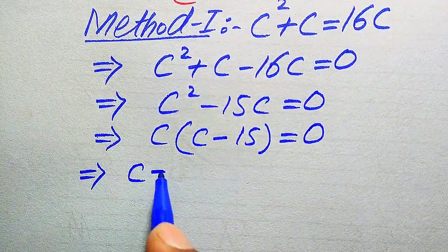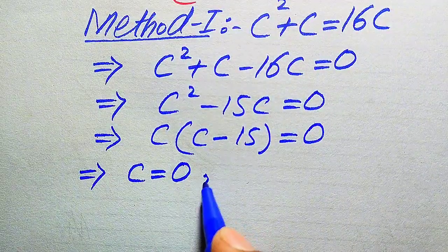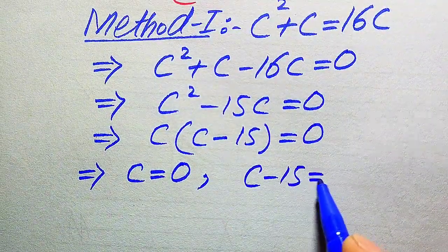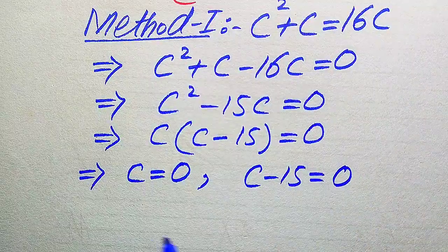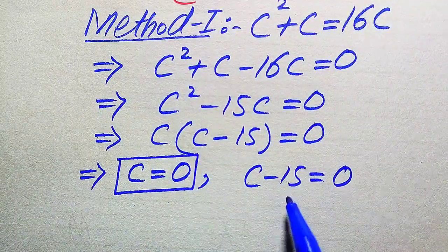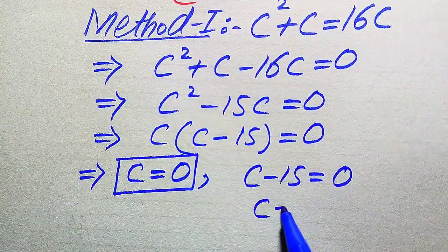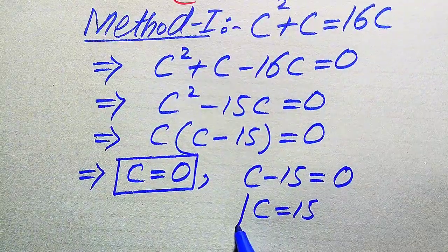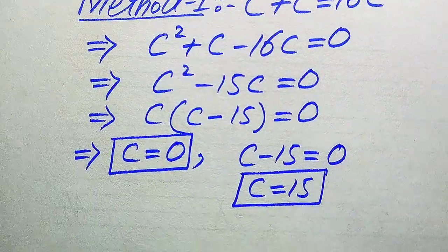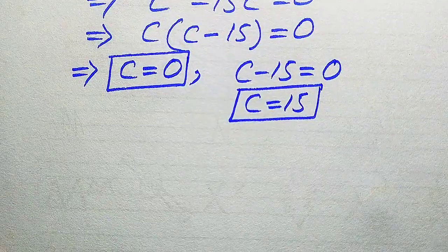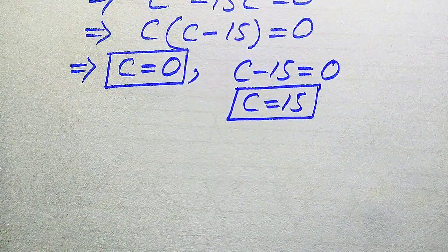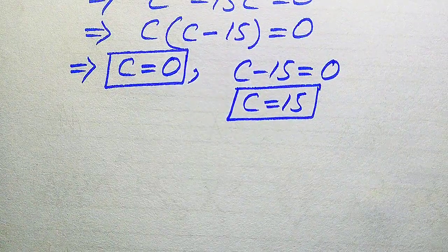We split this into two cases. The first case gives c = 0, which is the first root. The second case gives c − 15 = 0, so c = 15, which is the second root of the given equation.